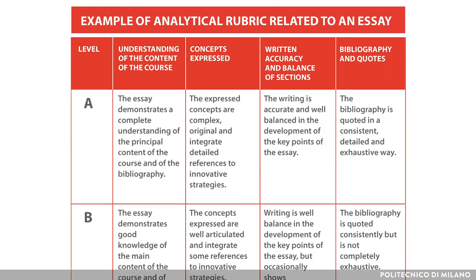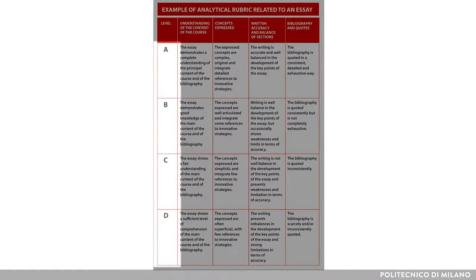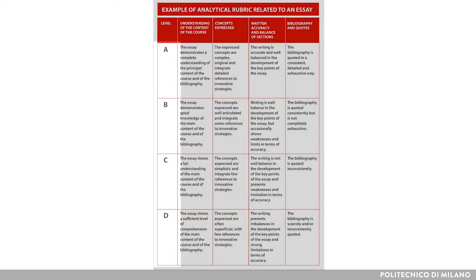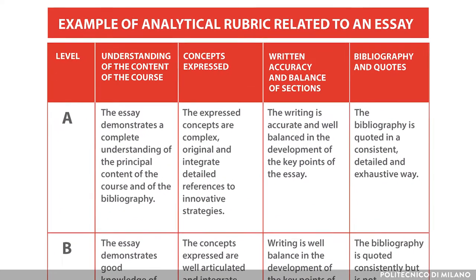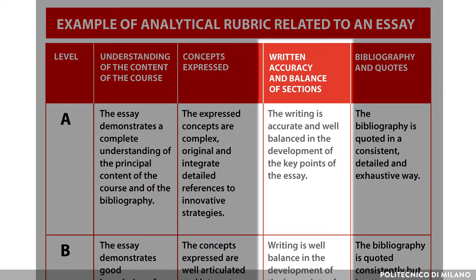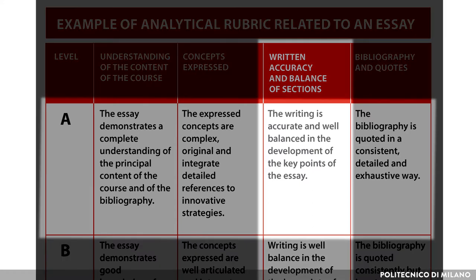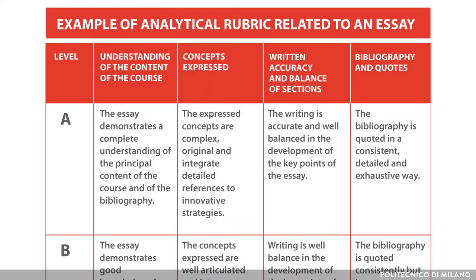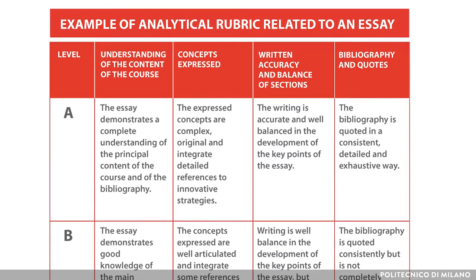For each criterion we'll have indicators that tell us if the performance related to that criterion was fulfilled or not. Related to the criterion of writing accuracy and balancing of the sections, we can see that the highest score is achieved when the writing is accurate and well balanced in relation to the key points in the essay. The indicator corresponds to the definition of a score we will attribute.